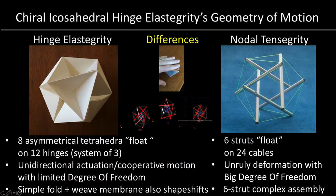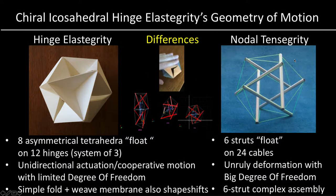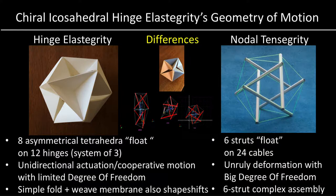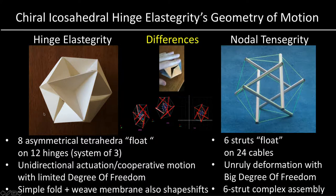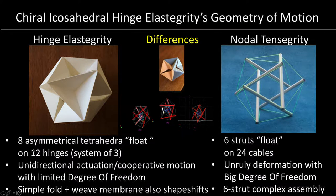The chiral icosahedral hinge-elastegra relates to the six-strut tensegrity. They both have rigid elements floating in a notion of elasticity — it's pre-stressed for the tensegrity. There are some important differences: first, the numbers and the elements that make it — 8 tetrahedra and 12 hinges of 3 versus 6 struts.